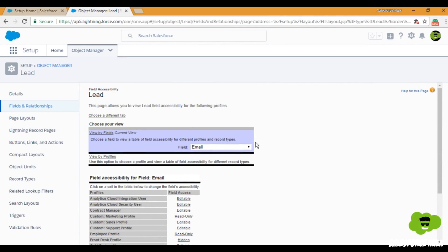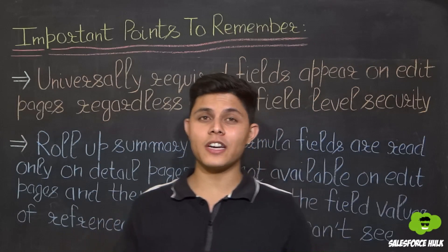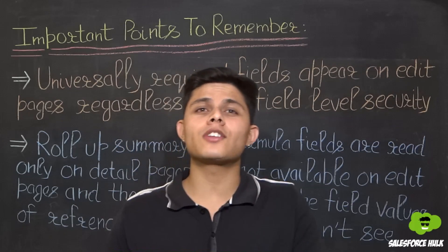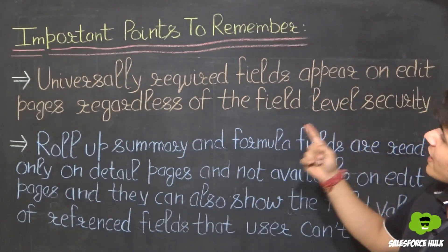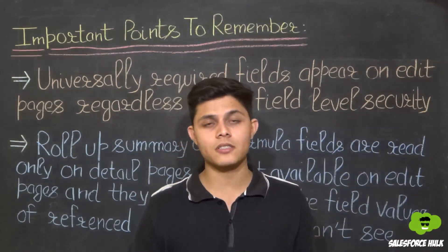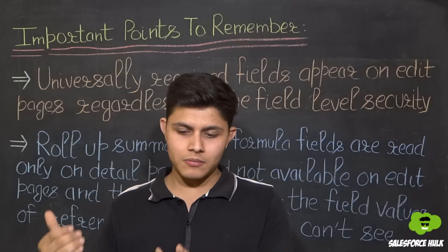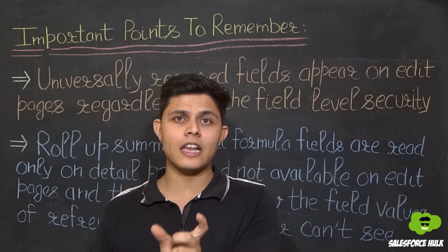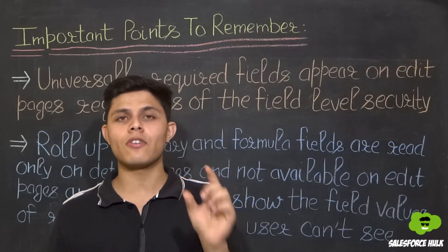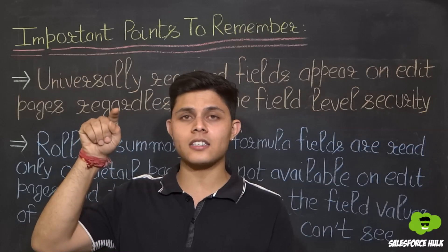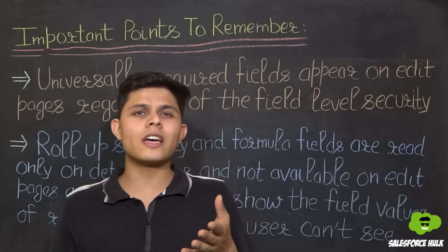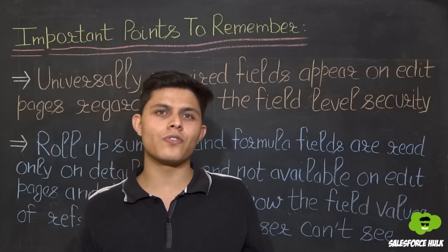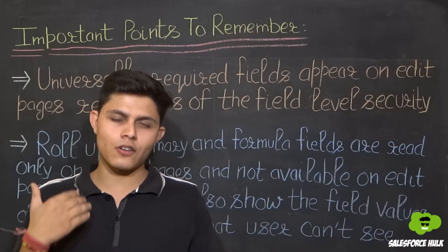Now let's cover the important points you need to consider with Field Level Security. The first one is: universally required fields appear on edit pages regardless of Field Level Security. Because universally required means that whenever a record gets created, this field's value must be present. Even you cannot edit this field's level security on profiles and permission sets, so you don't need to worry about it — but you do need to be aware of it.